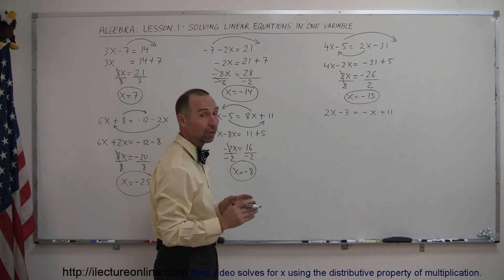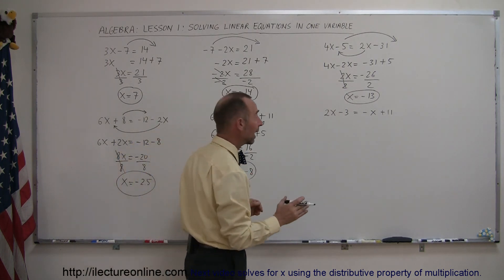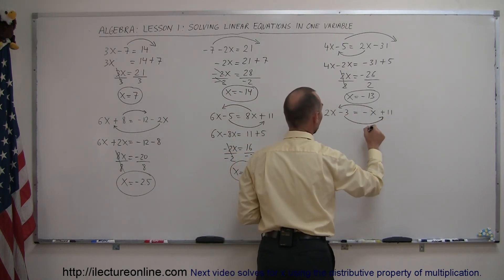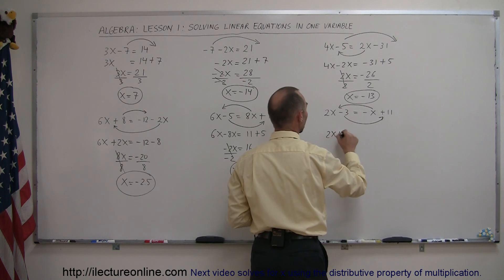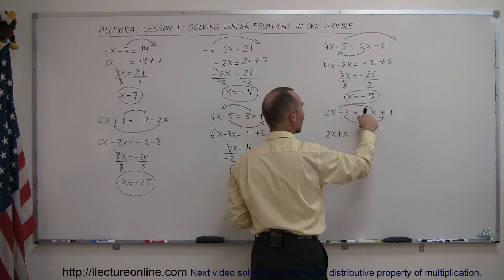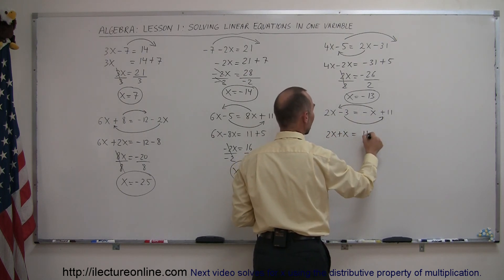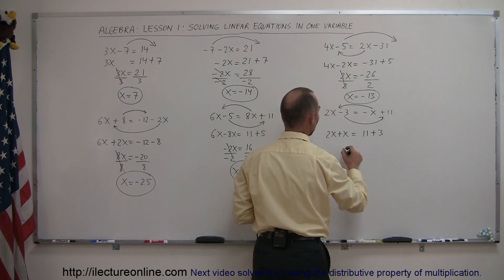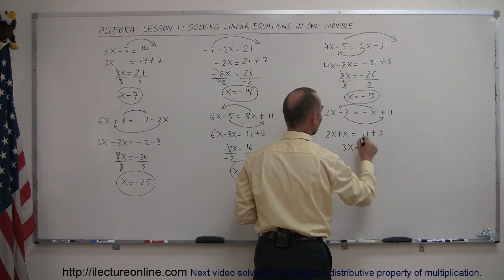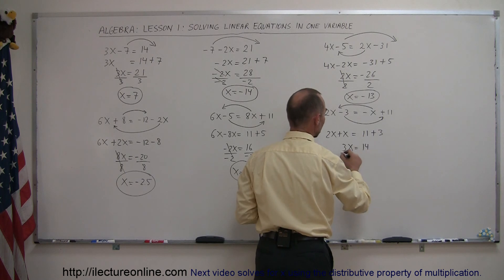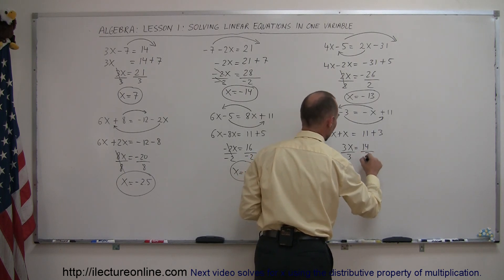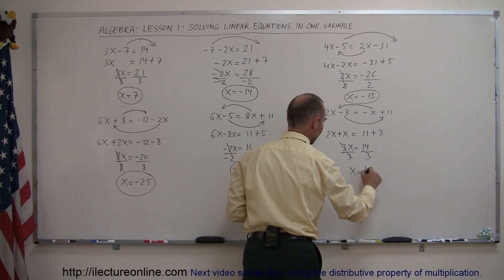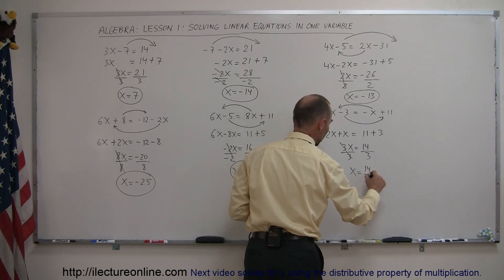Finally, the last example: move all the X's to one side and all the numbers without X to the other side. So we have 2X plus X; remember, when you cross the equal sign the sign changes, so that equals 11 plus 3. Combining: 2X plus X is 3X, which equals 11 plus 3 = 14. Dividing both sides by the numerical coefficient 3, the 3's cancel out and X equals 14 over 3.